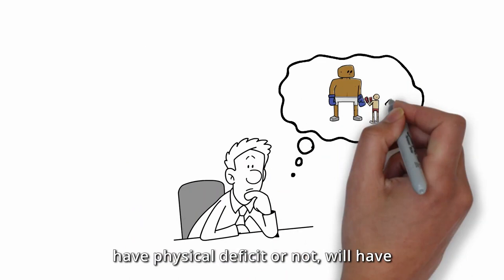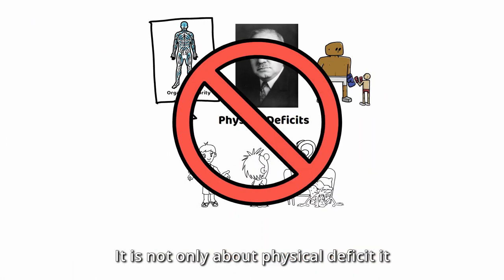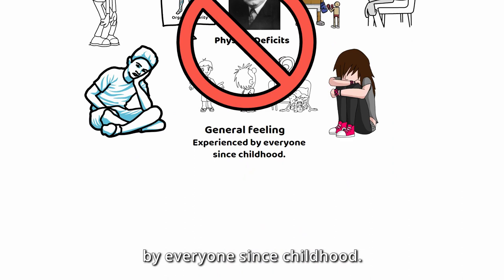But later, he extended his theory and suggested that everyone, no matter you have physical deficit or not, will have the sense of inferiority. This sense of inferiority is general and universal. It is not only about physical deficit, it is a general feeling that is experienced by everyone since childhood.